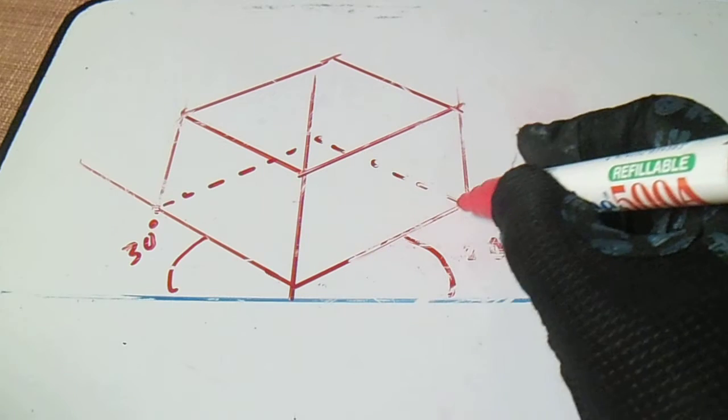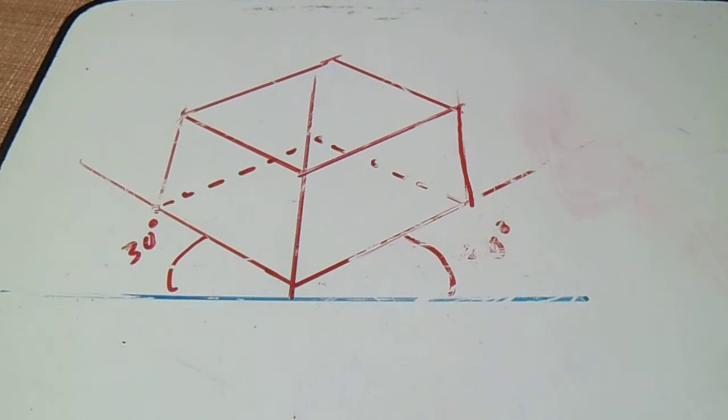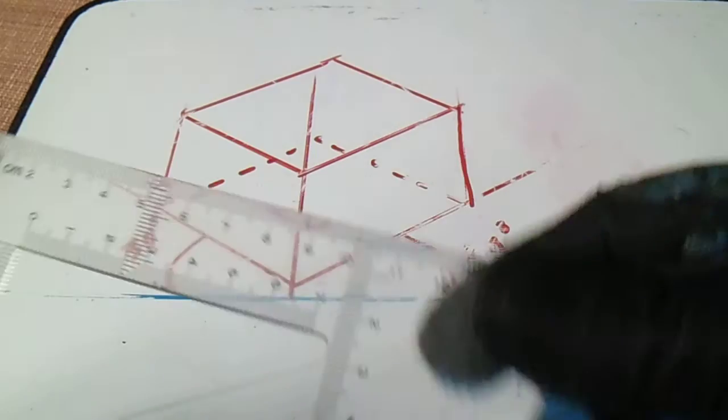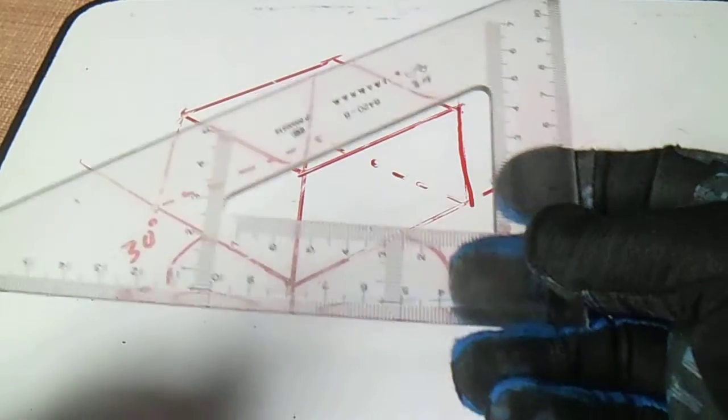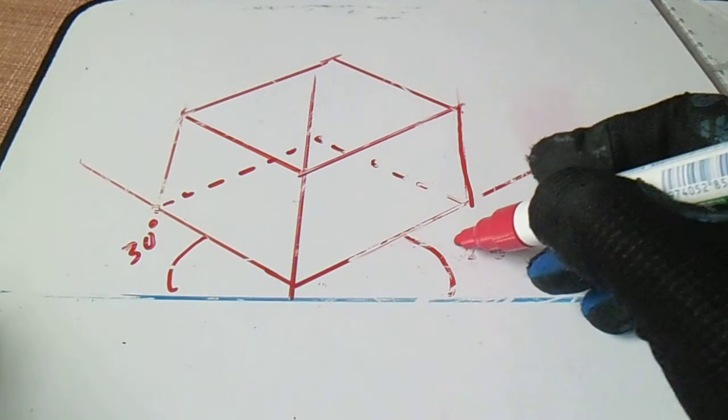So we have one isometric box using this 30 by 60 triangle. So very easy, right?